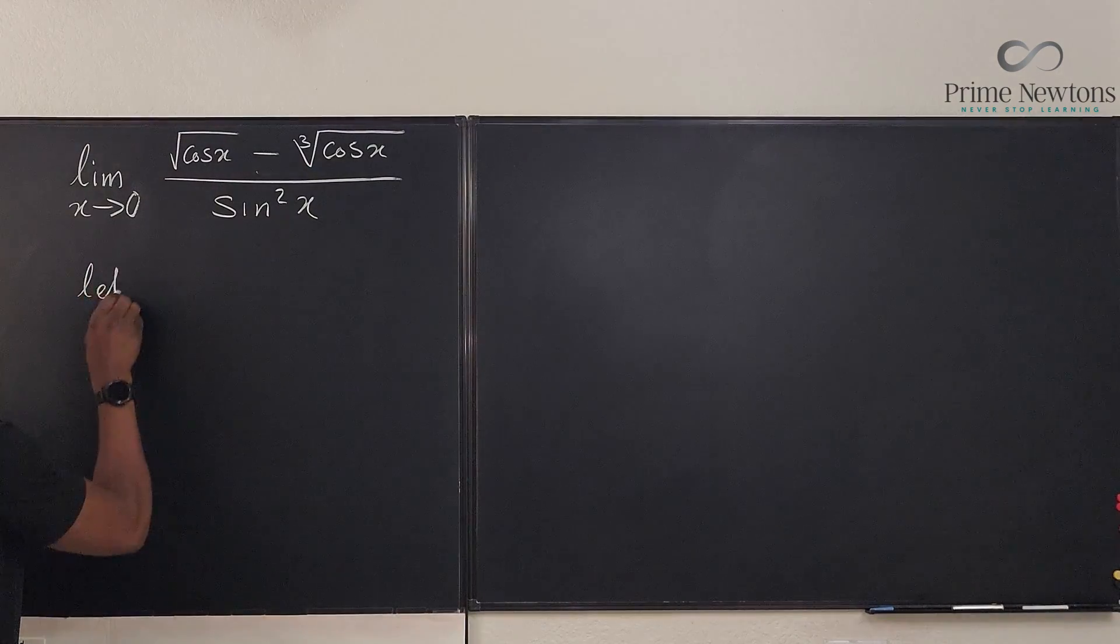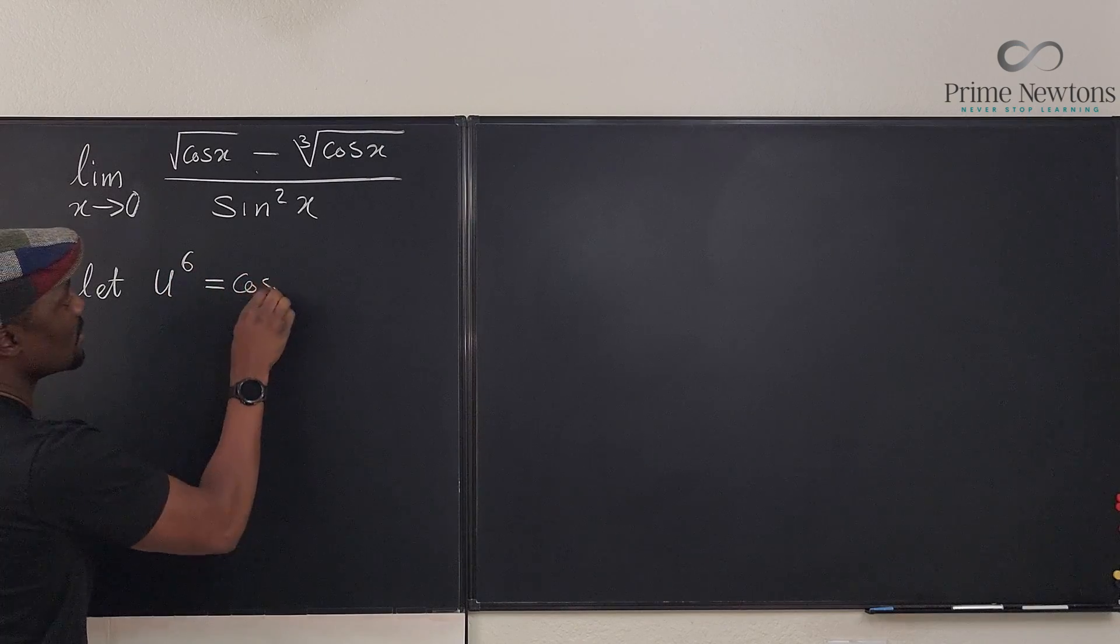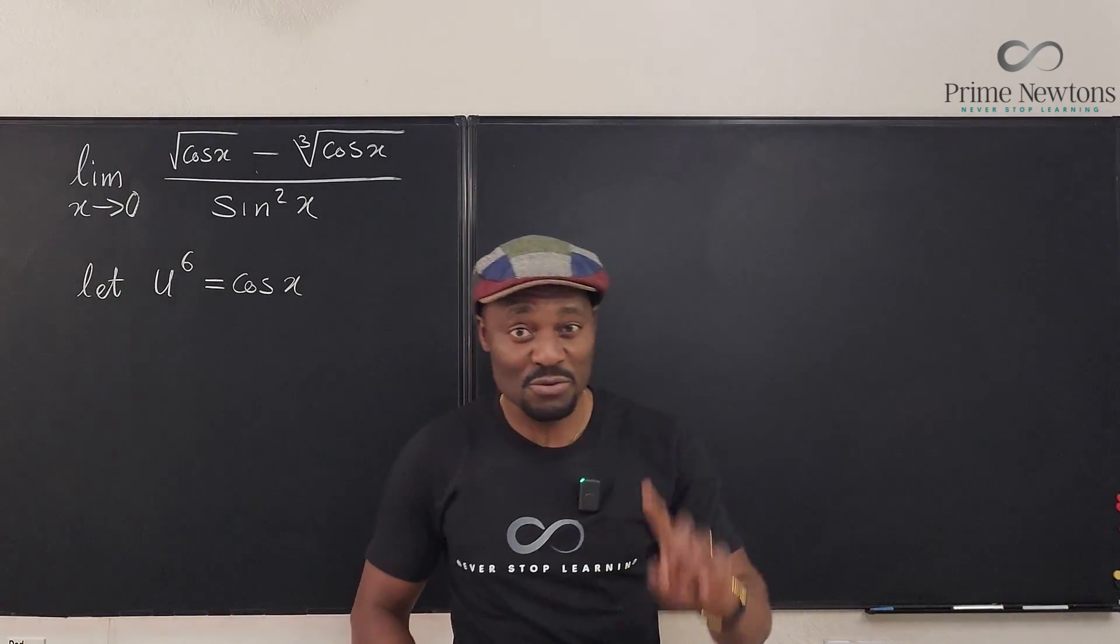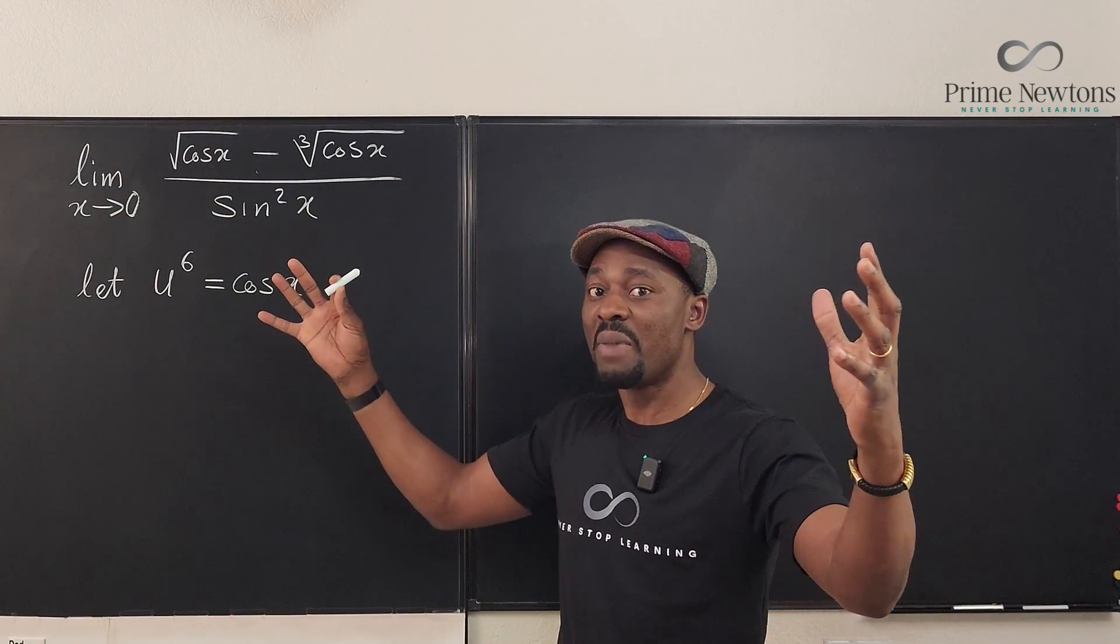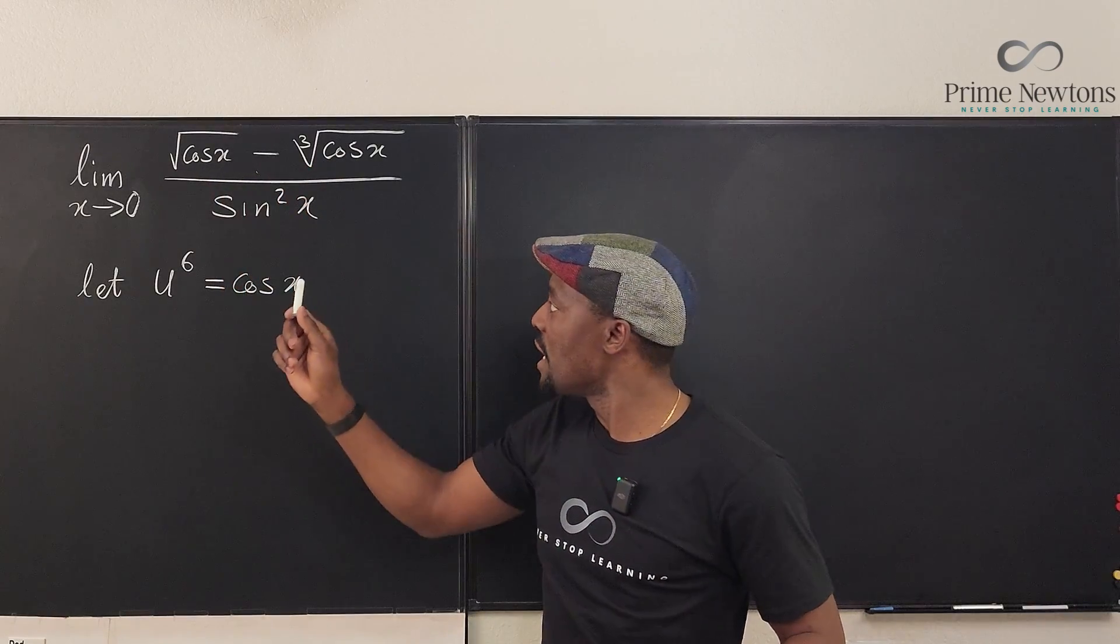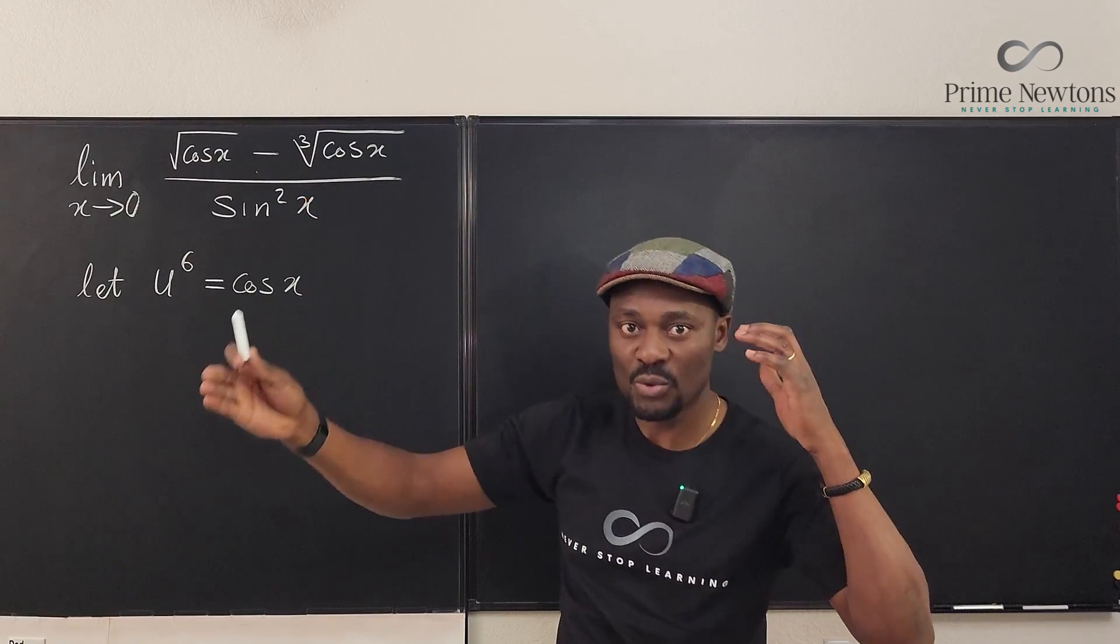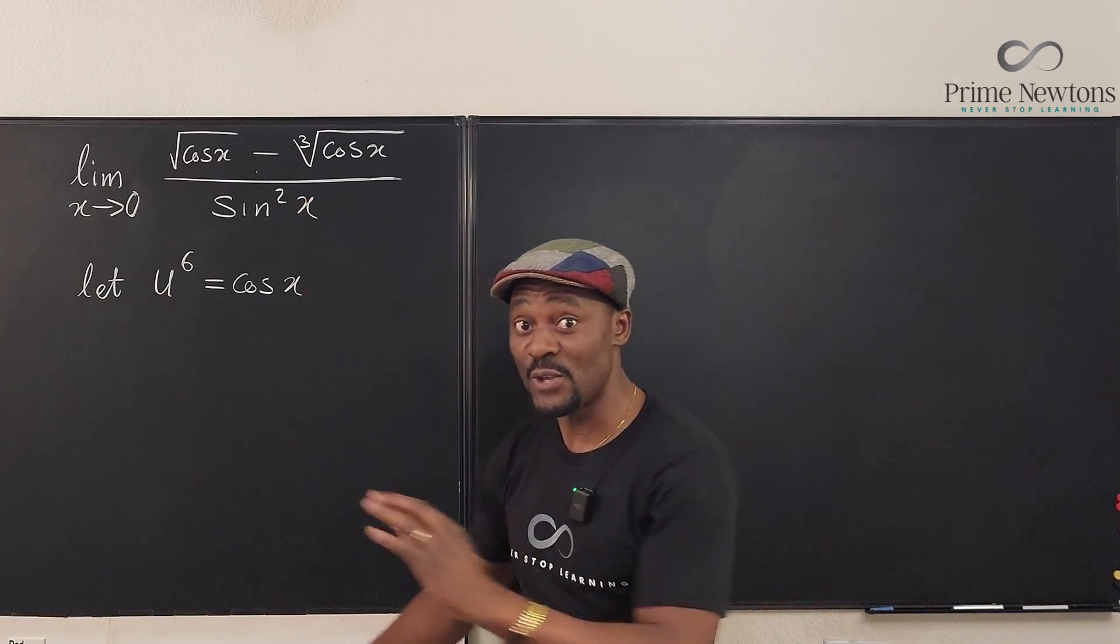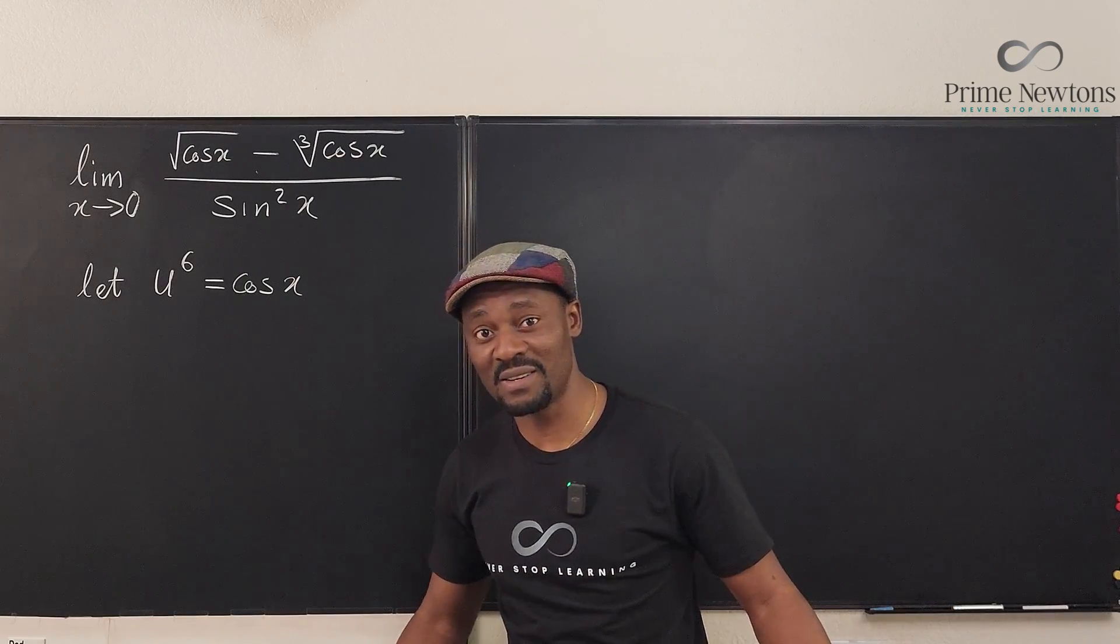I'm going to say let u to the sixth be equal to cosine x. It is very important that you make the correct substitution. So always combine the powers that are required to undo the two radicals. You need a square here, you need a cube here. So a square and a cube will be the sixth power. It's important that you choose that, otherwise you're going to keep going around and around and you won't get your answer.